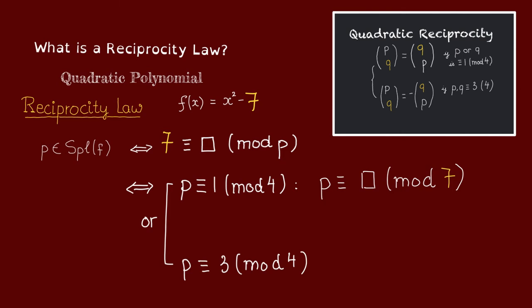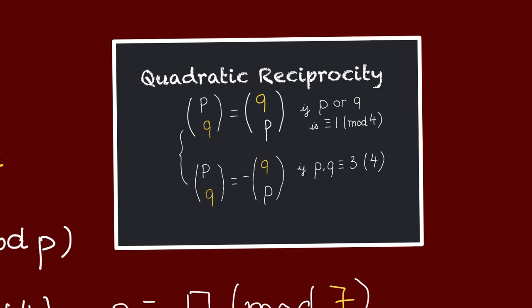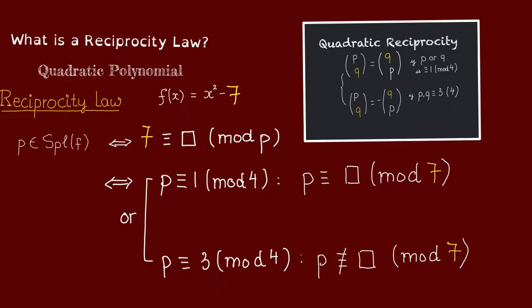So that means that this condition here is equivalent to p being a square modulo 7. Now if p is congruent to 3 mod 4, then by quadratic reciprocity, q is a square mod p if and only if p is not a square mod q. So the condition here will be equal to p is not congruent to a square mod 7.